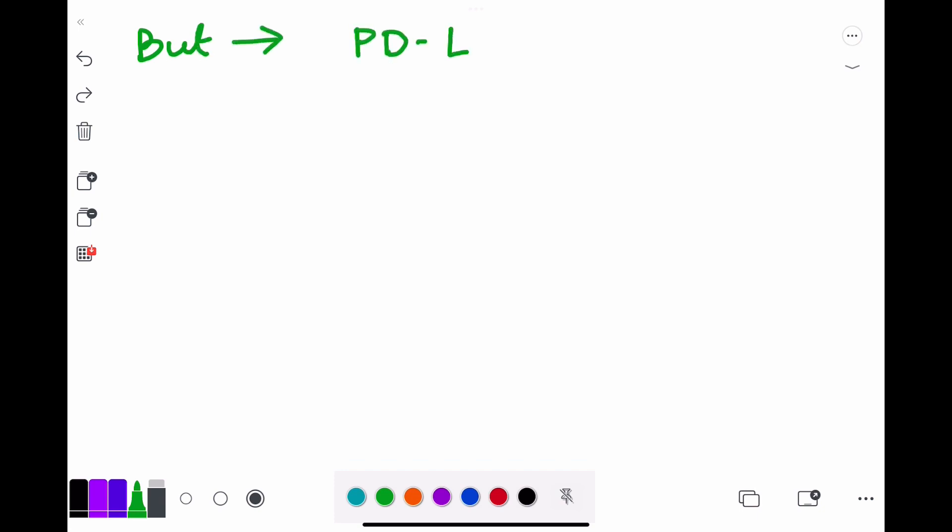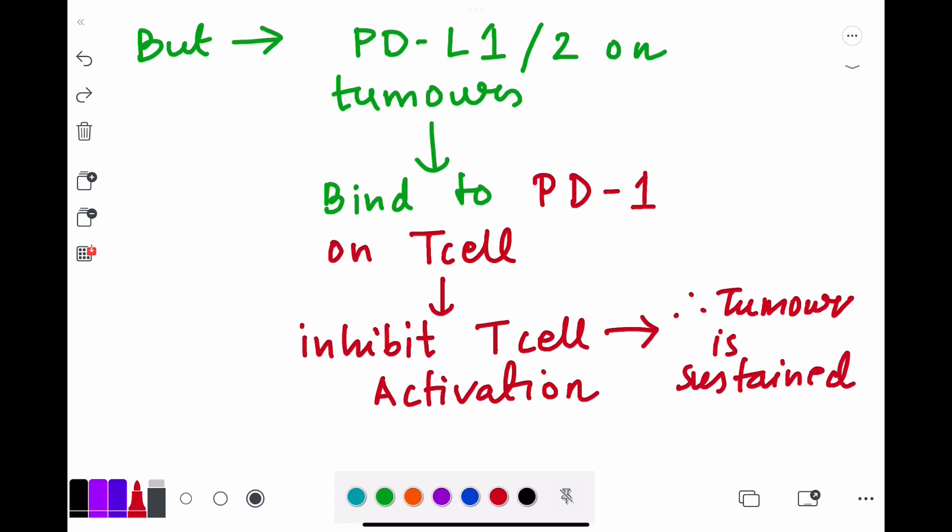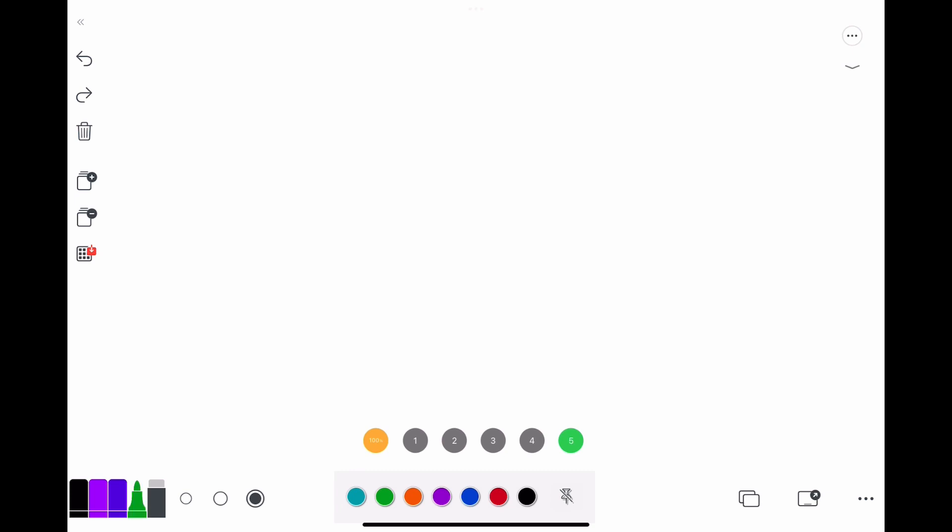Now what happens if a tumor is expressing this PDL1 or L2? If this is present on the tumor, then it will bind to the PD-1 receptor on T cell and this will inhibit the activation of T cell. T cell activation will be inhibited because of this interaction, and therefore the tumor will be able to sustain and grow. The T cell will not be able to kill it because the tumor cell is expressing the PDL1 or L2 to which the T cell is binding by a PD-1 receptor and getting inactivated.